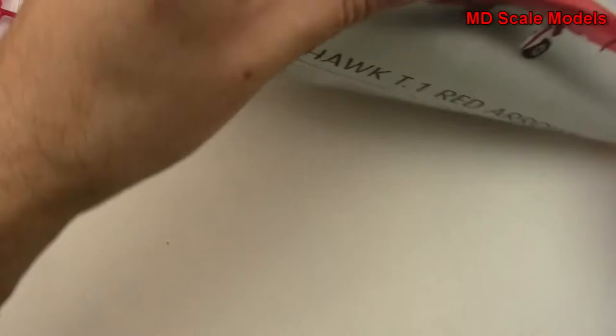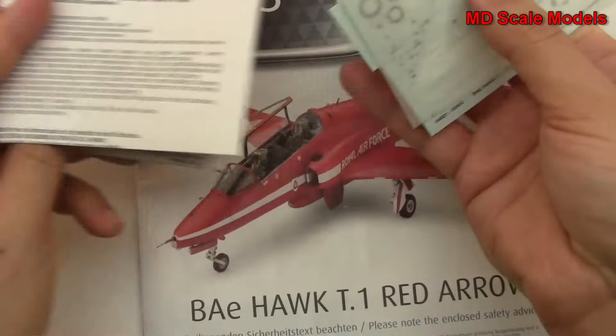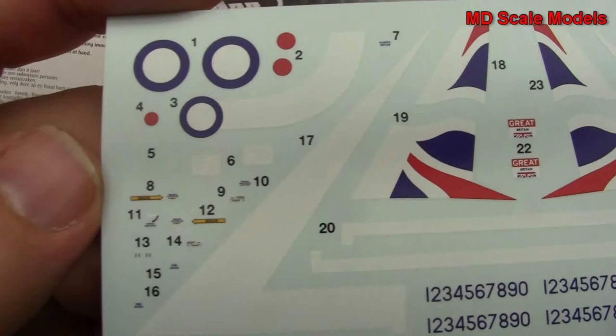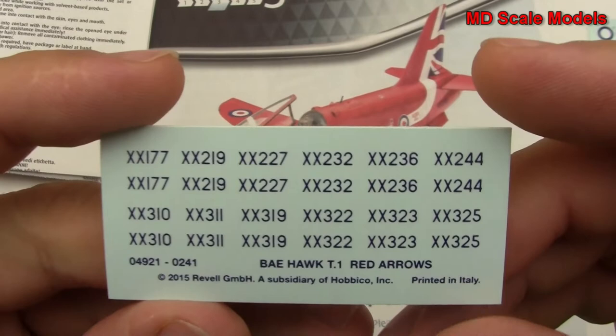And here we have our instructions and decal guide. So let's look at our decals here. Actually very nicely printed decals with lots of little detail there. There's the decals for the instrument panel, and then you can build different versions. Well, these are different numbers, they're the numbers of each of the individual planes.